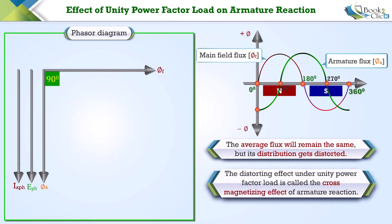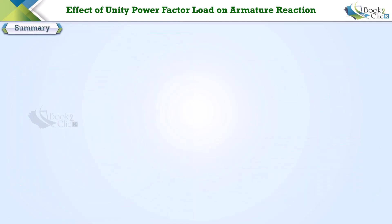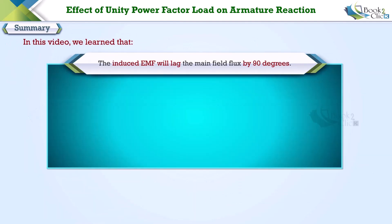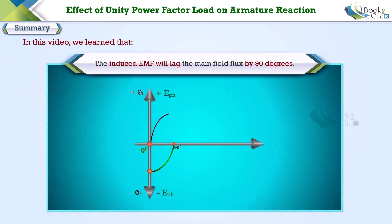Hence the average flux in the air gap of the alternator will remain the same, but its distribution gets distorted. This distorting effect of armature reaction under unity power factor load is called the cross-magnetizing effect of armature reaction. We have come to the end of this video. In summary, the induced EMF lags the main field flux by 90 degrees.